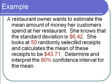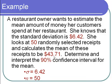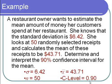Let's look at the cast of characters. $6.42 is the population standard deviation, so sigma equals 6.42. 50 is the sample size, so n equals 50. $43.71 is the sample mean, so x-bar equals 43.71. We want a 90% confidence interval, so C-Level equals 0.90. Now let's go to the calculator.